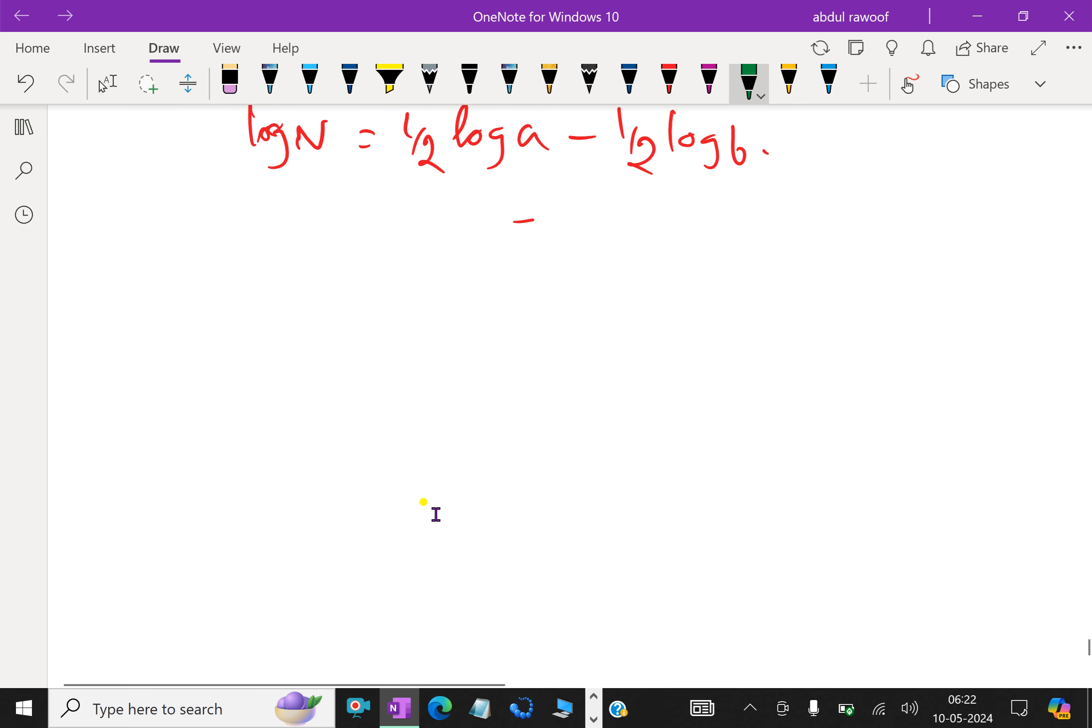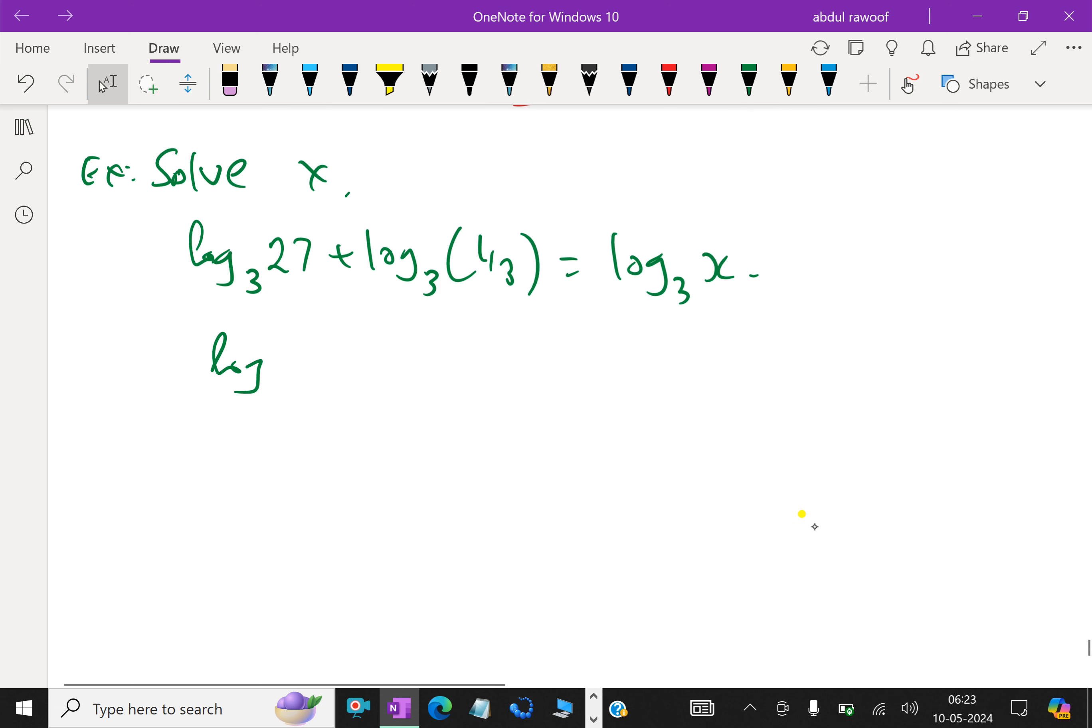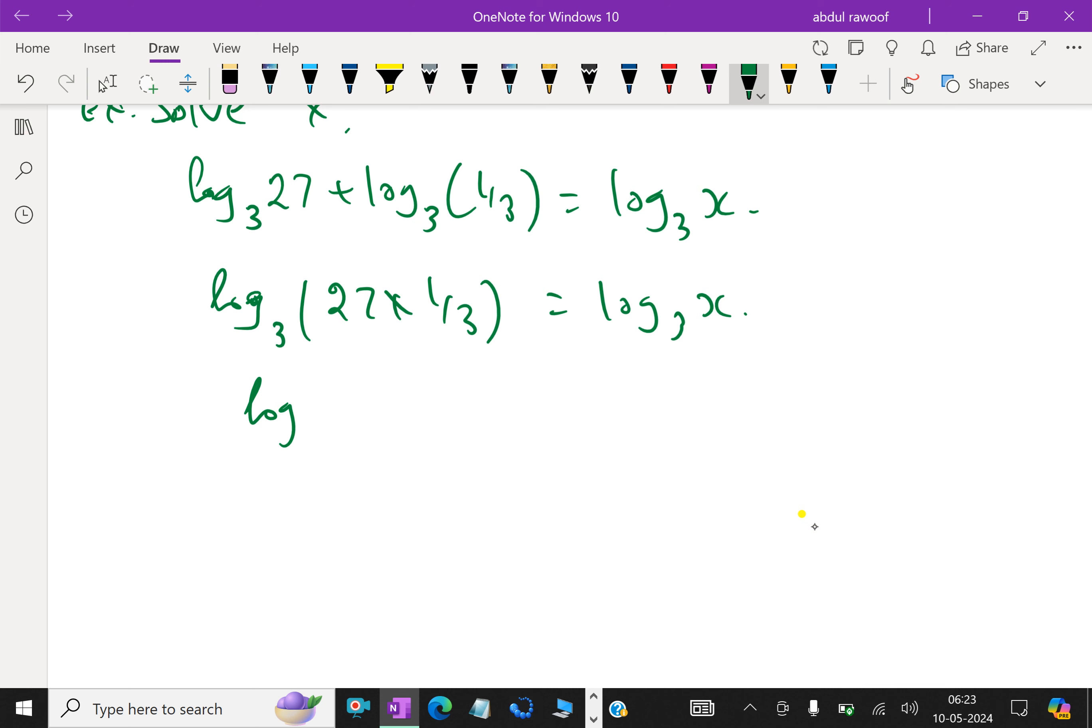Solve for x. For example, log base 3 of 27 plus log base 3 of 1 over 3 equals log base 3 of x. Here we have to combine these logs. This is log base 3 of 27 times 1 over 3, which equals log base 3 of x.